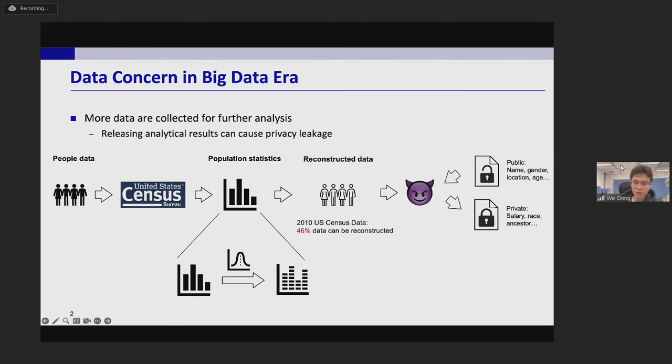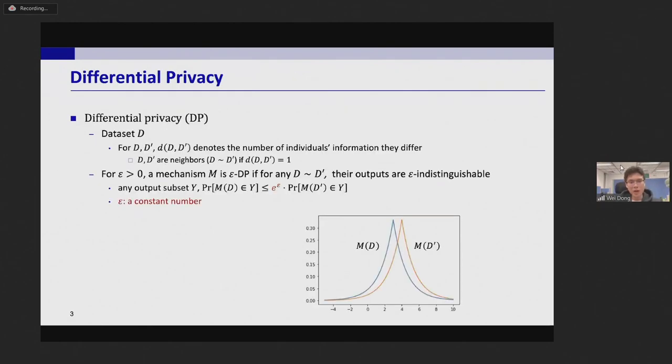This technology is called differential privacy. Let's see the formal definition. The data set is denoted by D and for D, D prime, we use small d to denote their distance, which is the number of individuals' information they differ. And we say D, D prime are neighbors if their distance is equal to one.